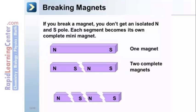Even if you go further and break those pieces, you once again end up with complete magnets. A north and a south pole on each.